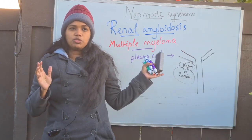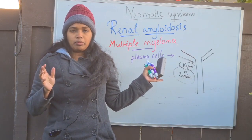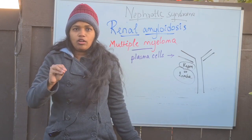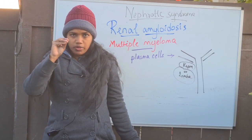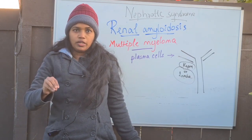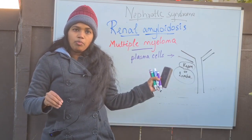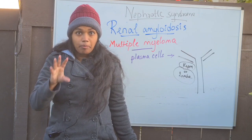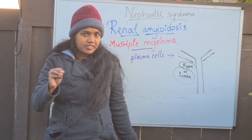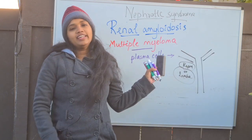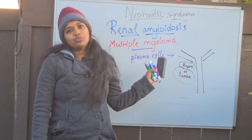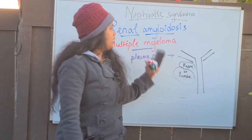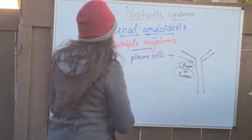Along with the protein seen in the urine, these abnormal proteins will also get deposited in the kidney parenchyma, resulting in renal amyloidosis. This is what you should know about renal amyloidosis.